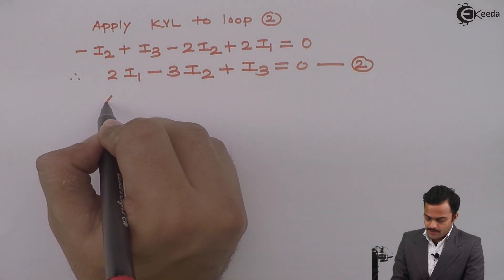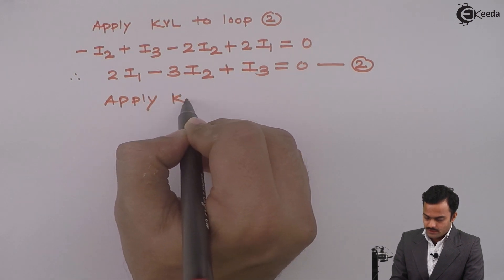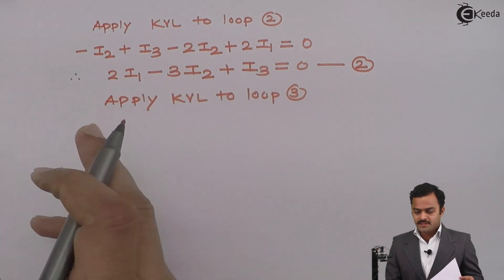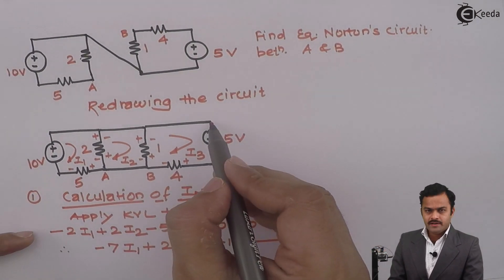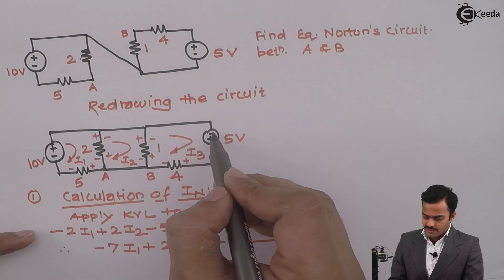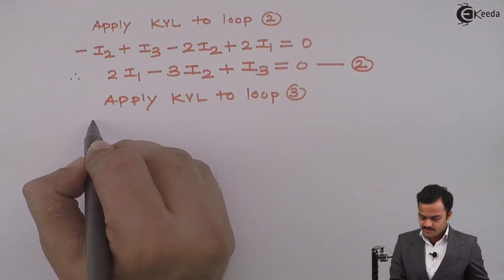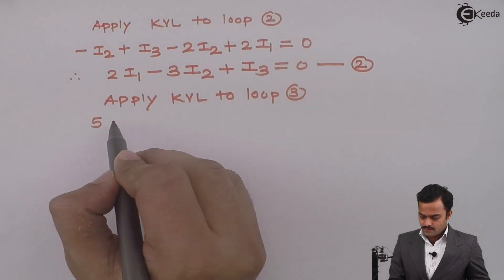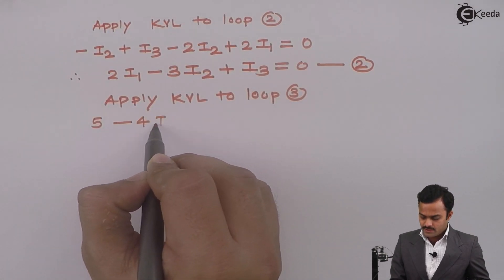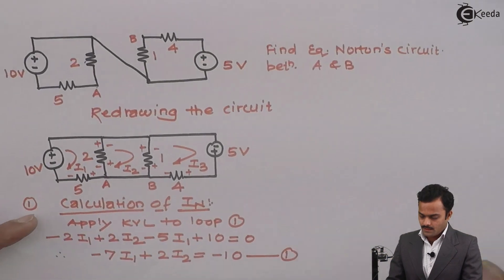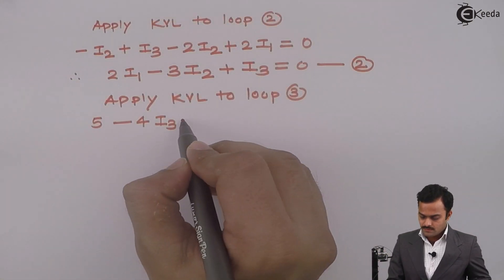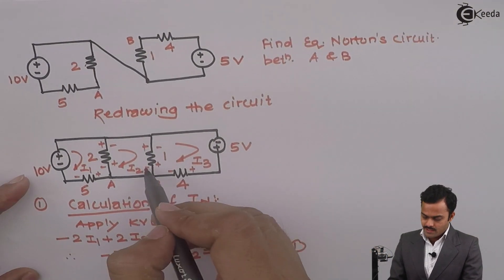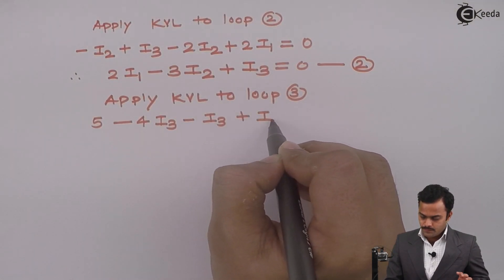Similarly I can apply KVL to loop 3. I will start from this point in this direction. Minus plus is the voltage rise, plus 5 volts, plus minus minus 4I3, plus minus minus I3, minus plus plus I2 equals 0.